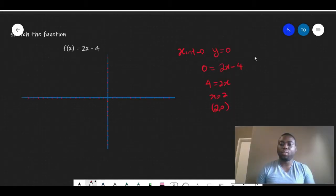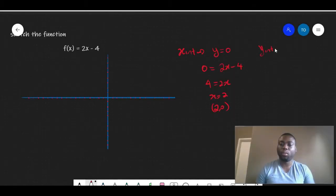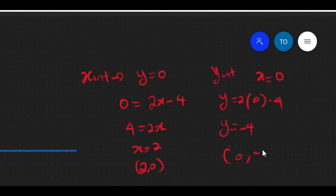The x-intercept is 2 and 0. The y-intercept would be... So as you can see, your x-intercept is (2, 0) and your y-intercept is (0, -4).